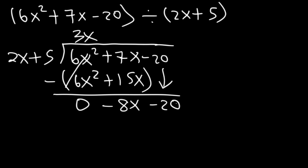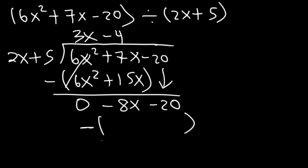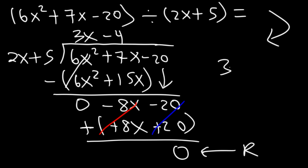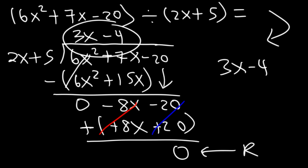We bring down the negative 20. Now divide negative 8x by 2x, which gives us negative 4. Don't forget the subtraction symbol. Multiply: negative 4 times 2x is negative 8x, and negative 4 times 5 is negative 20. Once you distribute the negative sign, all the signs inside change. Negative 8x plus 8x cancels, and these two cancel, giving a remainder of 0. So 6x squared plus 7x minus 20 divided by 2x plus 5 gives us 3x minus 4.